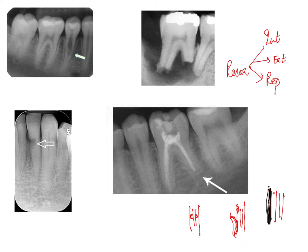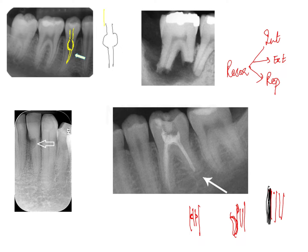Internal resorption is not visible clinically unless it involves the crown structure and eats up the tissue from within. If that does not happen, you will have to take radiographs, and in most cases it is an incidental finding. On the radiograph, if this is your root and this is the canal, the outline of the internal resorption is very characteristic — it is globular.